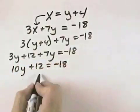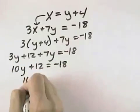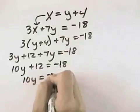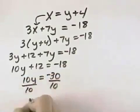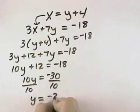Now getting y by itself, we can subtract 12 from both sides. So we have 10y equals negative 30. Then divide each side by 10, and we can see that y will equal negative 3.